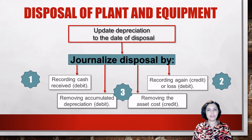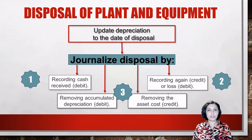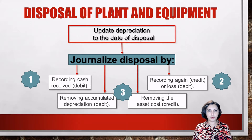Second, it must be determined whether a gain or loss is associated with this disposal. A gain is recorded with a credit, just like revenue, and a loss is recorded with a debit, just like an expense account. Third, we need to remove the plant asset's cost from the books with a credit and remove the related accumulated depreciation with a debit. Let's see how to calculate the gain or loss associated with the disposal.